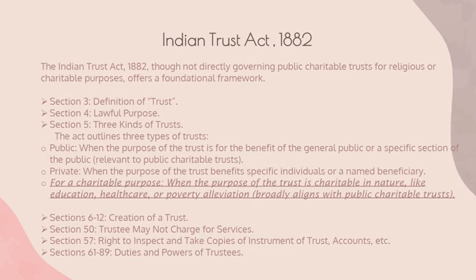Sections 6 to 10 explain the creation of a trust, including who may create a trust, the subject of trust, who may be a beneficiary, and who may be a trustee, respectively. Additionally, Section 50 prohibits trustees from charging for their services, emphasizing the selfless nature of their role in managing trust assets for charitable purposes.